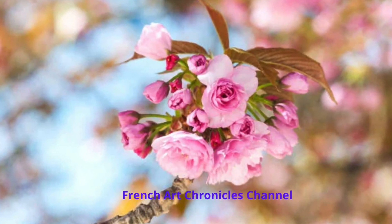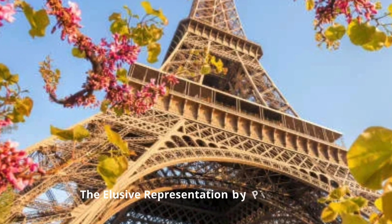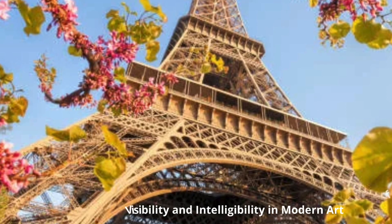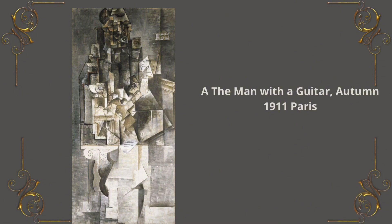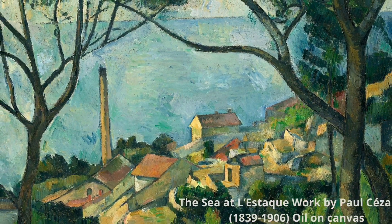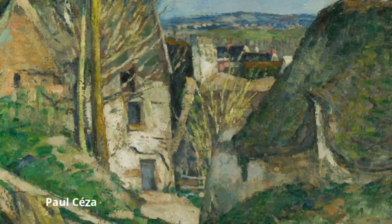The elusive representation by Picasso: the challenge of visibility and intelligibility in modern art. Initiated in the techniques of traditional painting, Pablo Picasso broke away abruptly with the creation of Les Demoiselles d'Avignon in 1907, a major work now in the United States. This act marked his entry into the Cubist revolution. His painting The Guitarist, which he kept in his own collection for a long time, provided his insight into his experiments within this pioneering movement of contemporary art.